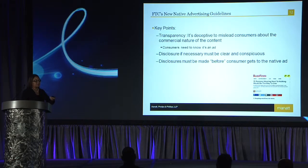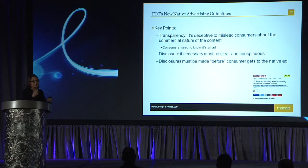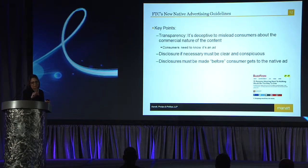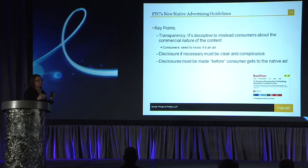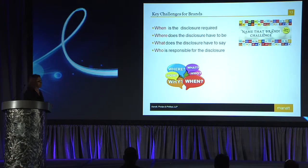The disclosures have to be made before the consumer gets to the native ad. For example, if you're coming from a widget that says 'recommended for you' or 'around the web,' it's not enough if the consumer clicks on that thumbnail and then gets to a native ad. They have to know before they click that they're going to be directed to an ad, because the FTC thinks it's incredibly harmful to a consumer to click on something they think is content only to find out it's an ad.